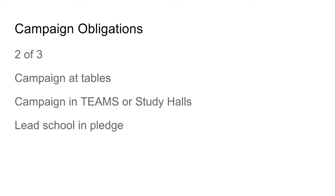Or you could campaign in teams or study halls — I really suggest this. Go to team teachers and ask them if you can have a minute to give a short one-minute speech in the teams or in different study halls. This may not be available to you depending on your schedule, but if you can get it to work out, this seems to be a good way to reach voters. All you have to do is have your teacher email me to confirm you campaigned in that team. You have to do a minimum of five teams or study halls, or a combination of the two.